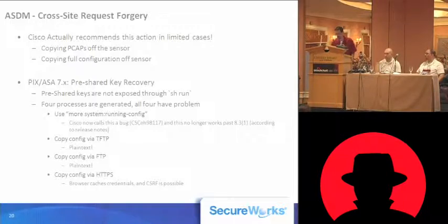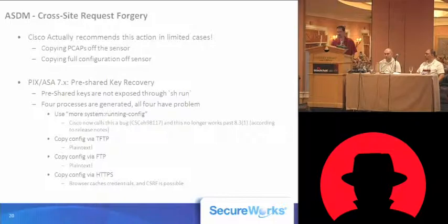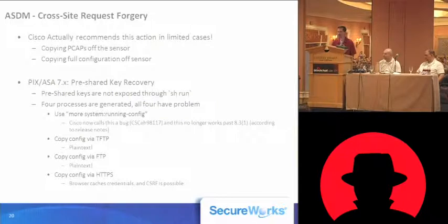The other ways to get pre-shared key recovery are also interesting. The next two are to copy it over TFTP or FTP. What strikes me as odd is that the whole reason you need to do this is because Cisco won't show you the pre-shared keys over an encrypted SSH session when you're authorized — yet they suggest sending them over TFTP or FTP, which are plaintext protocols. I don't understand how those two stances can be reconciled. If pre-shared keys are so sensitive that we don't want to show them over an encrypted channel, why would we want to send them over plaintext?